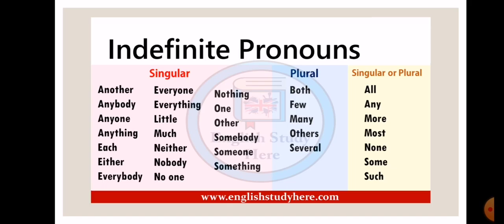Moving on, these are some of the indefinite pronouns that are listed. Some of them can be used as singular, others are used as plural, and there are some which can be used as singular or plural depending on the sentence. The singular ones include another, anybody, anyone, anything, each, either, everybody, everyone, everything and so on. The plural ones include both, few, many, others, several. Whereas there are some that can also be used as singular or plural, for example, all, any, more, most, none, some, such.